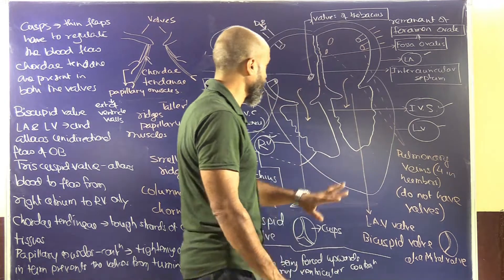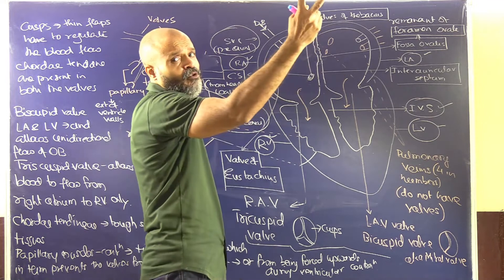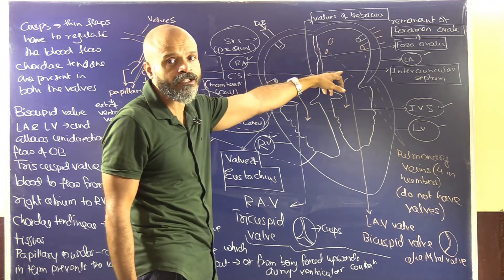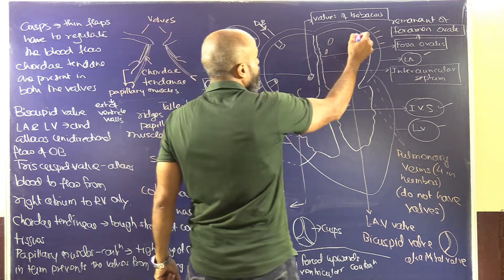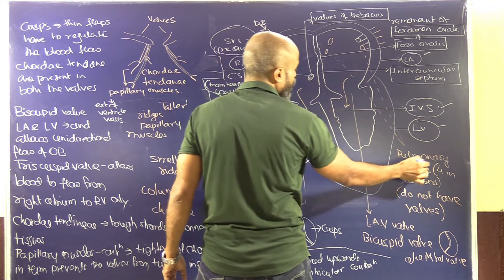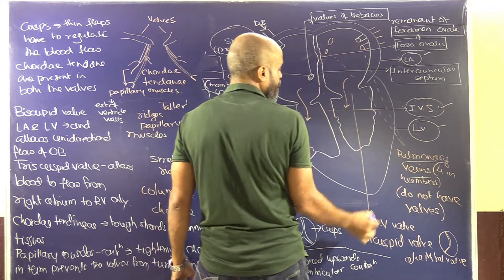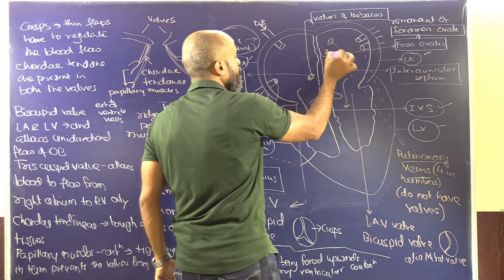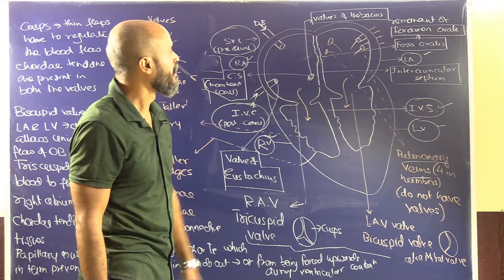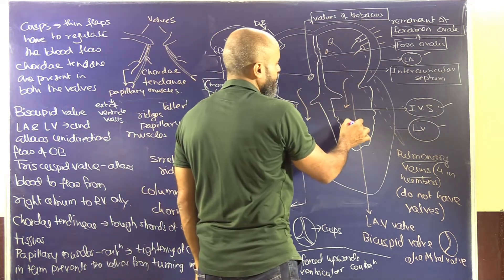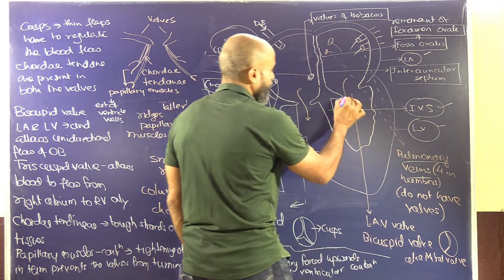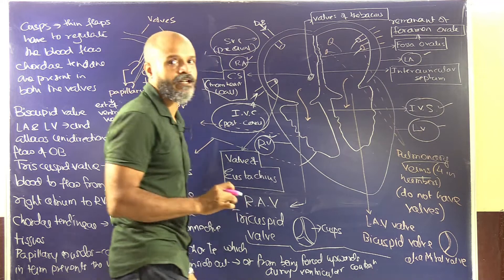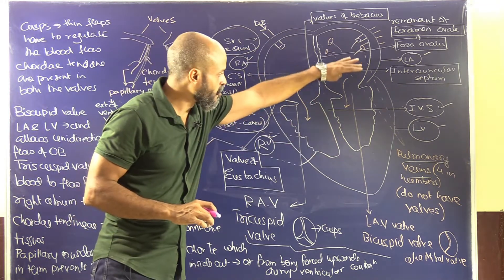Since we have two lungs, there are four pulmonary veins — two from the left lung and two from the right lung — pouring oxygenated blood into the left atrium. This oxygenated blood then goes into the left ventricle. Between the auricles and the ventricles there are valves to prevent backflow, because the ventricles contract with great force to pump blood.